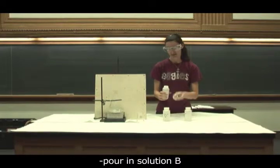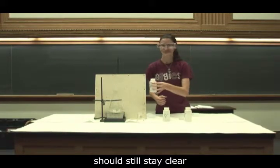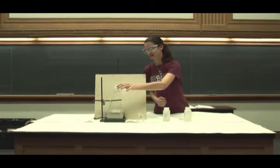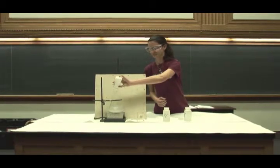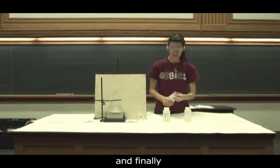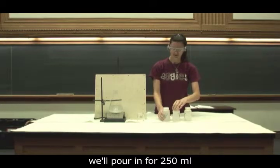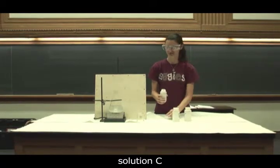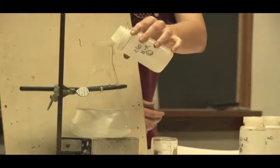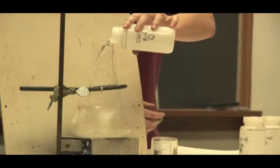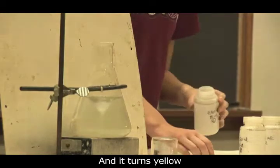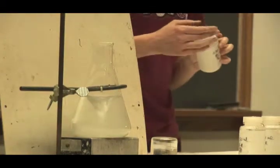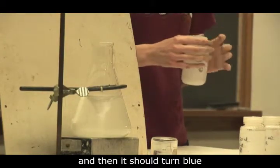Next I'll pour in Solution B. It should still stay clear. And finally, we'll pour in our 250 milliliters of Solution C. Then it turns yellow, then it turns clear, and then it should turn blue.